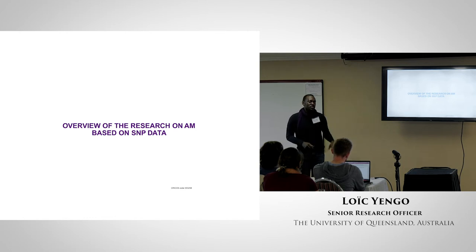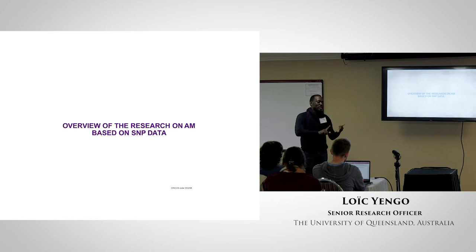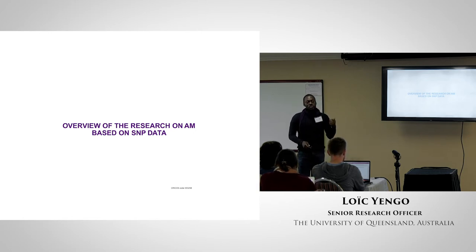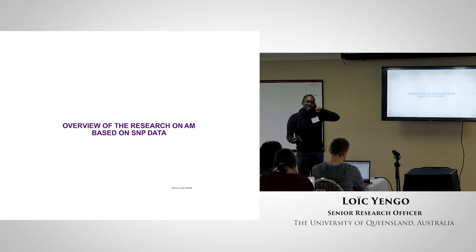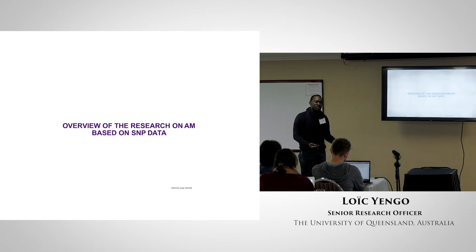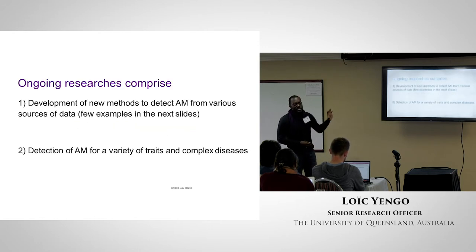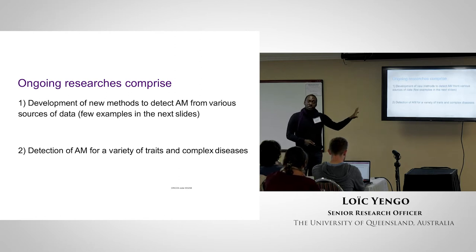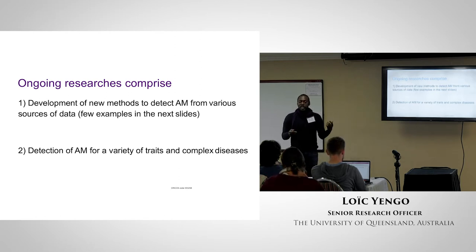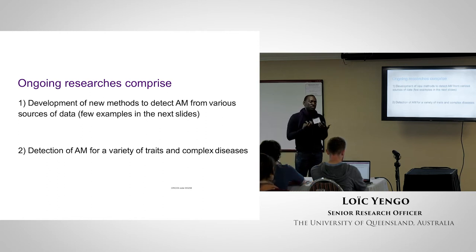Assortative mating is a long-standing question that people are interested in regardless of research interest — sociologists, epidemiologists, geneticists. One reason it's become more interesting lately is the availability of genetic data, which lets us revisit many questions from a different angle. A lot of methodological research is happening: how to combine data and find powerful methodology, how similar spouses are on their genetic relationship, and trying to break down correlations — are they environmental, genetic, or driven by mate choice? This is particularly important for understanding how the prevalence of certain diseases can increase over time.